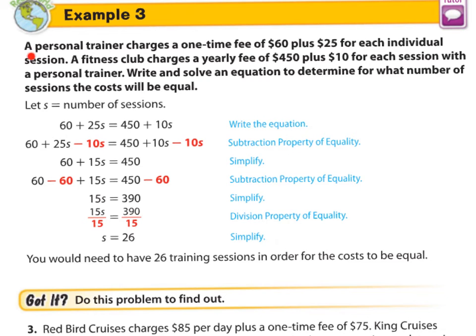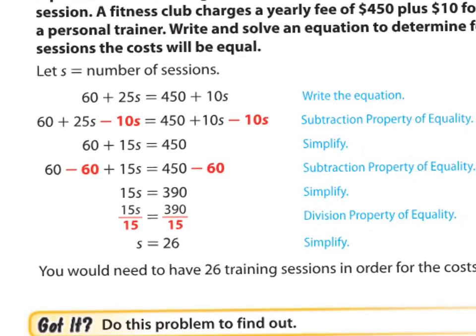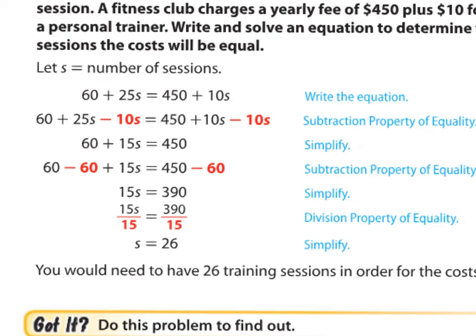This is how this would apply in real-world context. A personal trainer charges a one-time fee of $60 plus $25 for each individual session. A fitness club charges a yearly fee of $450 plus $10 for each session with a personal trainer. Write and solve an equation to determine what number of sessions the cost will be equal. So you see a one-time payment of $60 to sign up and then $25 each time, or a one-time payment of $450 and $10 each time. At one point, both of these will match up depending on the number of sessions purchased. And that's what our variable will be, the number of sessions. So let's see here. Zoom in. So we're going to let S be our variable. So S will be the number of sessions. So $60 upfront plus $25 for every personal training session, or $450 upfront and $10 per session.